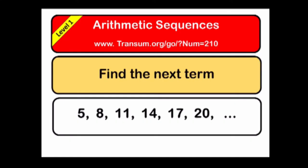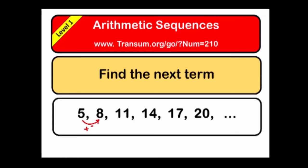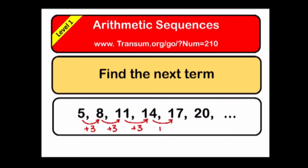Hello, and this is the help video to help you do the Arithmetic Sequences Online exercise. Let's not waste any time and get straight into level one, where we have a number sequence. The reason this is called an Arithmetic Sequence, or a Linear Sequence, is because we're constantly adding the same number each time to get to the next term. Each term is three more than the previous term, so to find the next term we just add another three on to twenty, and that makes twenty-three.